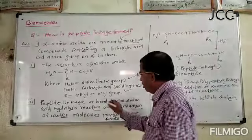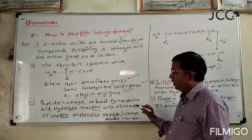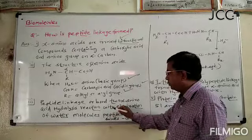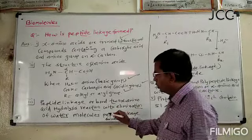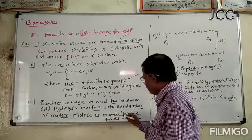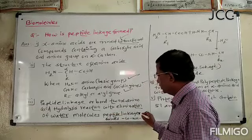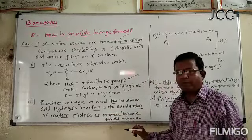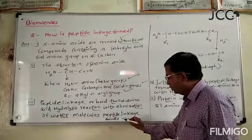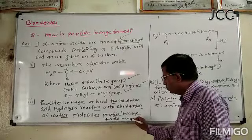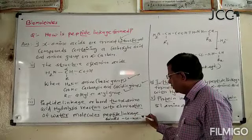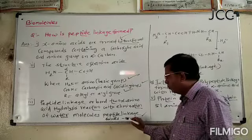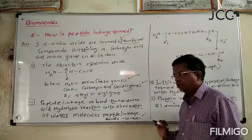The peptide linkage is formed from two alpha amino acids reacting with elimination of a water molecule. The peptide linkage is: single bond CO, single bond NH. This CO-NH bond is called the peptide linkage.